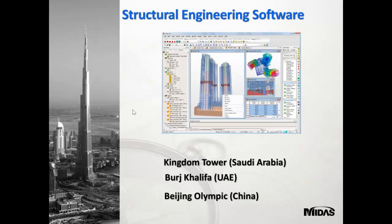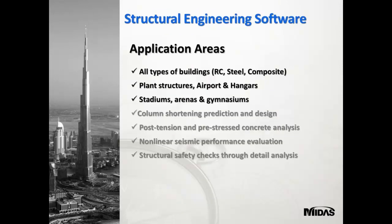These are applications of our structure software. We have the Kingdom Tower in Saudi Arabia, the Burj Khalifa in UAE, and the Beijing Olympic structures — these are major projects done with the software. For building structures, we cover all types: reinforced concrete, steel composite, and general structures like plant structures, airports, hangars, stadiums, arenas, and gymnasiums. You can also do column shortening prediction, prestressed concrete analysis, non-linear seismic performance evaluation, and structural safety through detailing analysis.